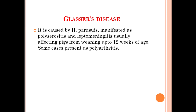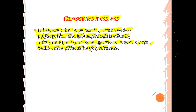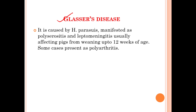Glässer's disease is caused by Haemophilus parasuis and is manifested as polyserositis and leptomeningitis, usually affecting pigs from weaning up to 12 weeks of age. Some cases also present as polyarthritis. The causative agent is Haemophilus parasuis, affecting pigs from weaning age up to 12 weeks.